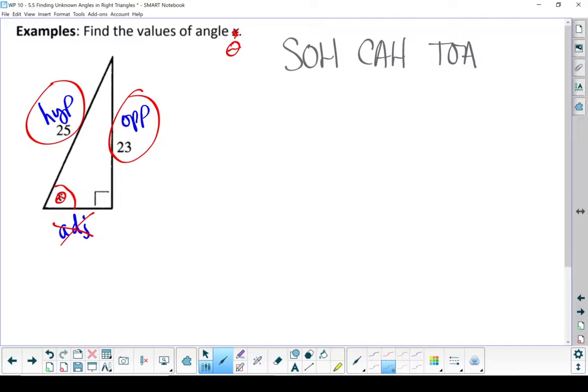I'm looking for the trig ratio that has the hypotenuse and the opposite side. That's sine. Anything with the adjacent side isn't useful. Okay, let's write our formula down.